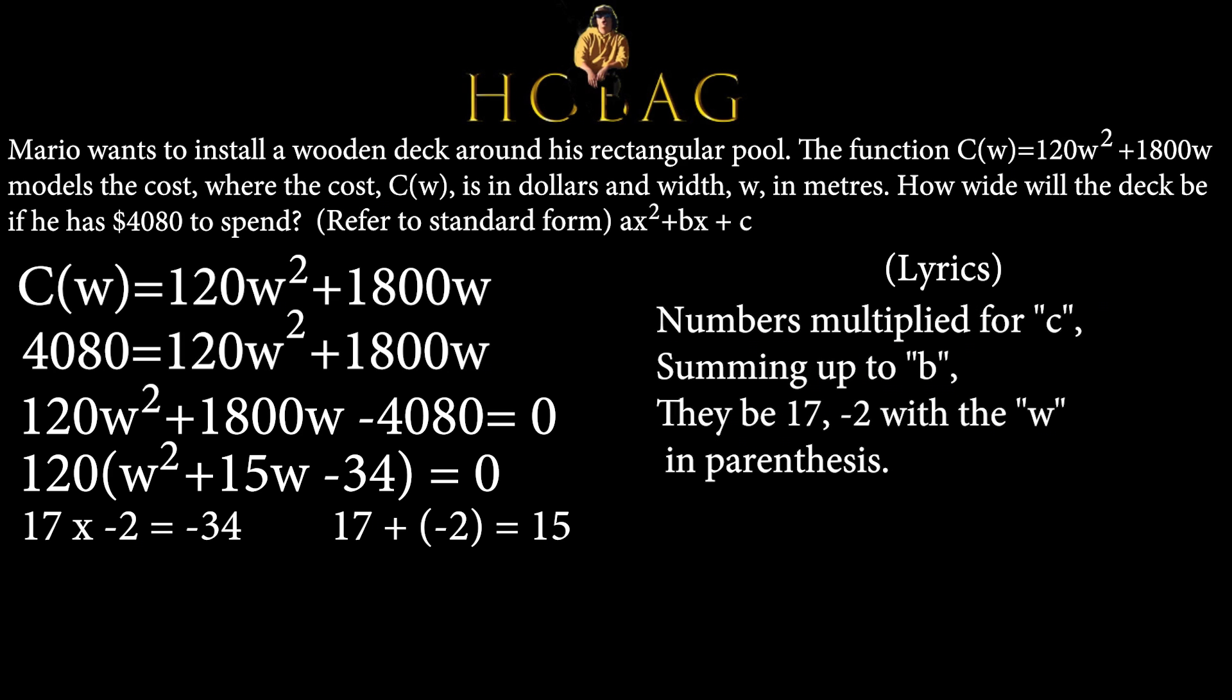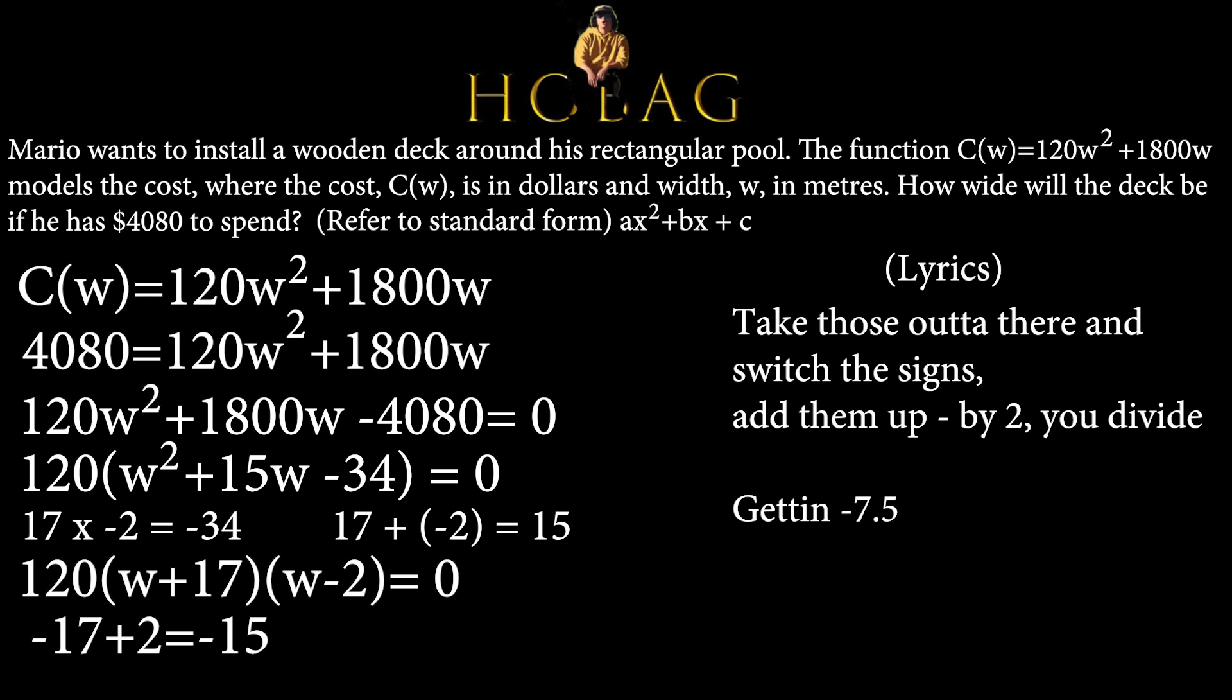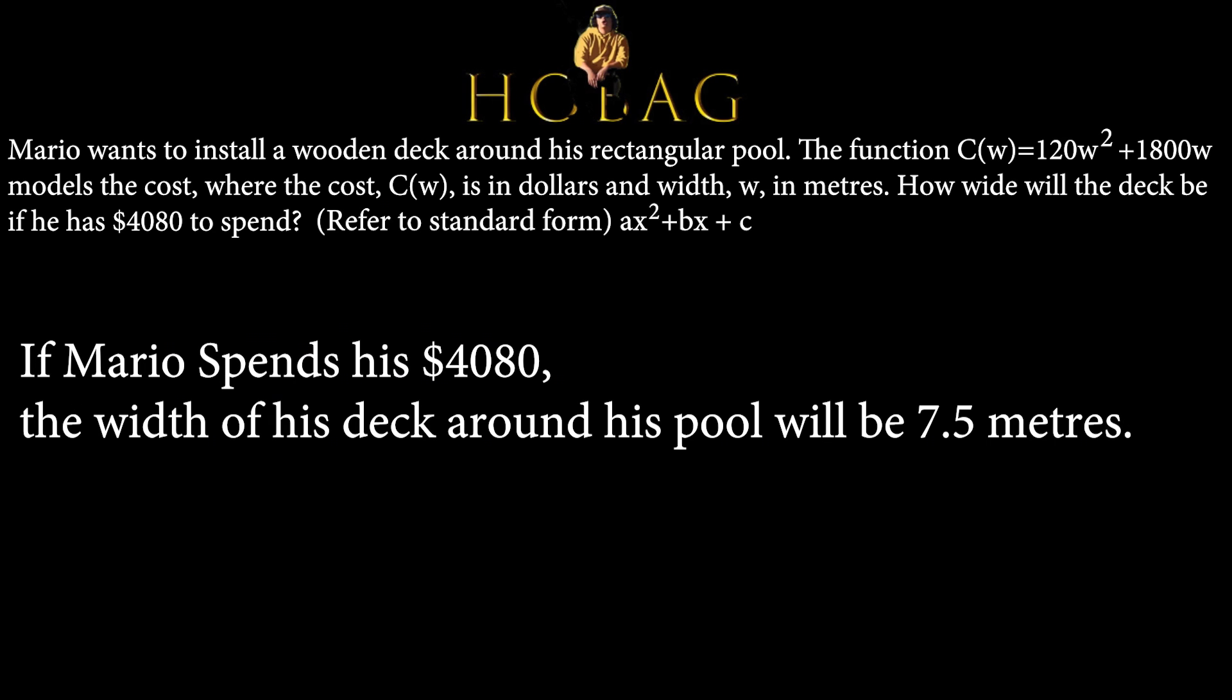Numbers multiplied for c, summing up to b, they'd be 17 minus 2 with the w in parentheses. Take those out of there and switch the signs, add them up by 2, you divide, getting minus 7.5. Same answer as before when we completed the square, that way we know what's right.